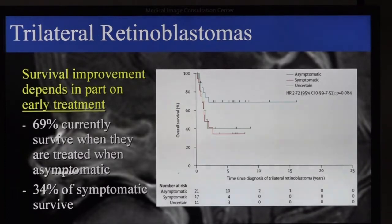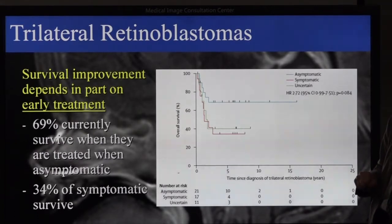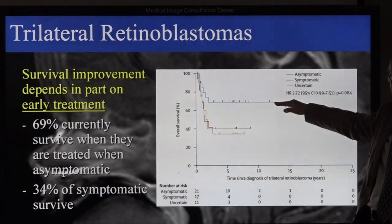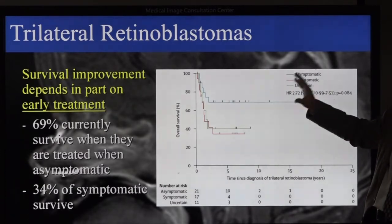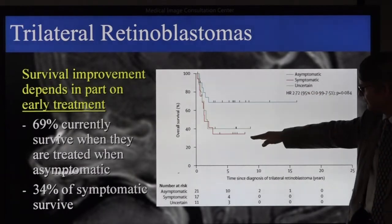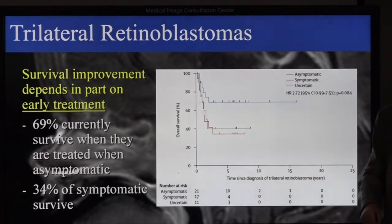Is there any predictor of survival? There are some associative findings. The survival improvement depends not only on the treatment regimen, but also on tumours being found earlier. 70% now survive if treated before any symptoms develop, and these are mostly cases with tumour found at the same time as the intraocular disease. But even if there are symptoms, one third of the children survive past five years, although that is only based on four cases.